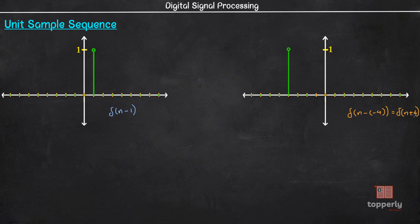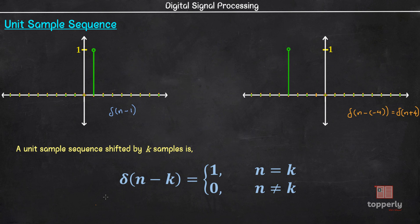So in general, a unit sample sequence shifted by k samples is δ(n-k), which is equal to 1 when n = k, and equal to 0 when n ≠ k.